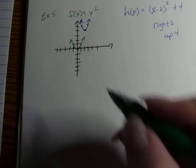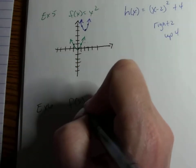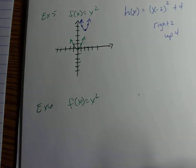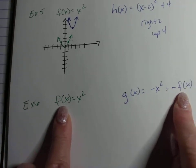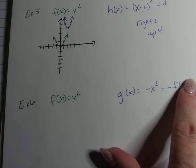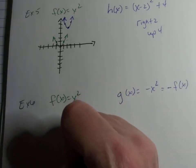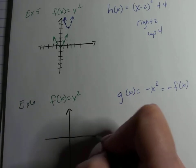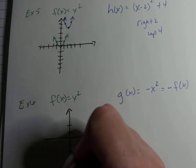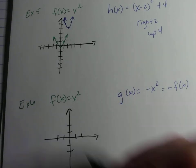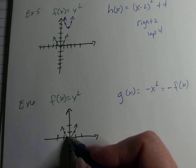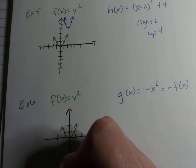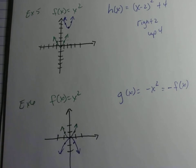Next, starting with f(x) = x², we graph g(x) = −x². The negative means the graph reflects — it's the opposite of our original function. We draw the basic parabola and all points flip over, so the graph ends up upside down. That's what the negative does.